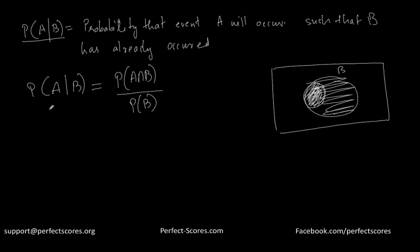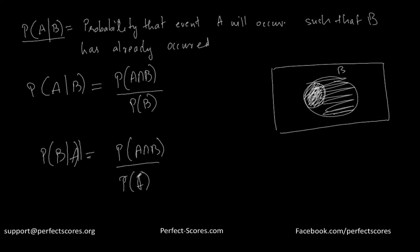So the probability of A occurring given that B has already occurred equals the probability of A intersection B divided by the probability of B. Similarly, the probability of event B occurring given that A has already occurred equals the probability of A intersection B divided by the probability of A. I recommend watching the first video if you haven't — it will clarify the concept of conditional probability, because this video is specially designed to show you how to solve conditional probability using the tree diagram.